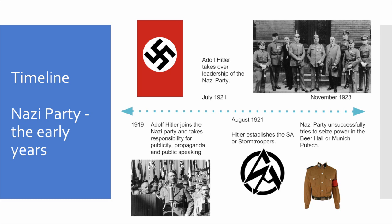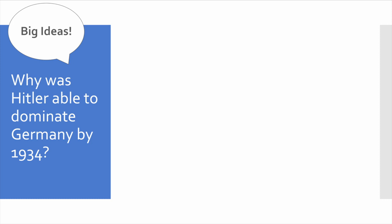And then, finally, in 1923, the Nazi Party unsuccessfully tries to seize power in the Beer Hall, or Munich Putsch. So that's our short timeline to get us started.